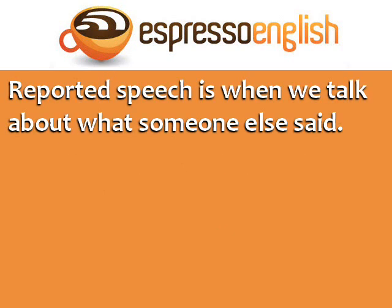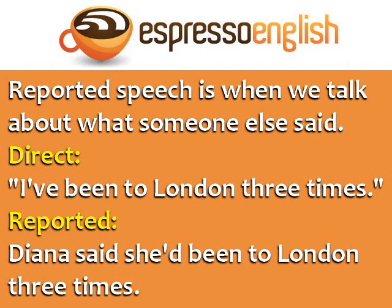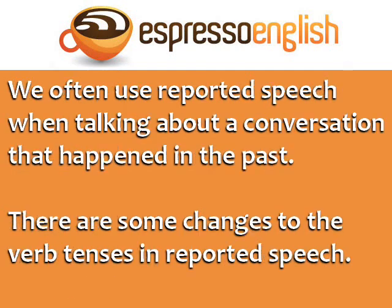Reported speech is when we talk about what someone else said in the past. For example, if your friend Diana said, 'I've been to London three times,' the reported speech is: Diana said she'd been to London three times. We often use reported speech when talking about a conversation that happened in the past, but there are some changes to the verb tenses in reported speech.